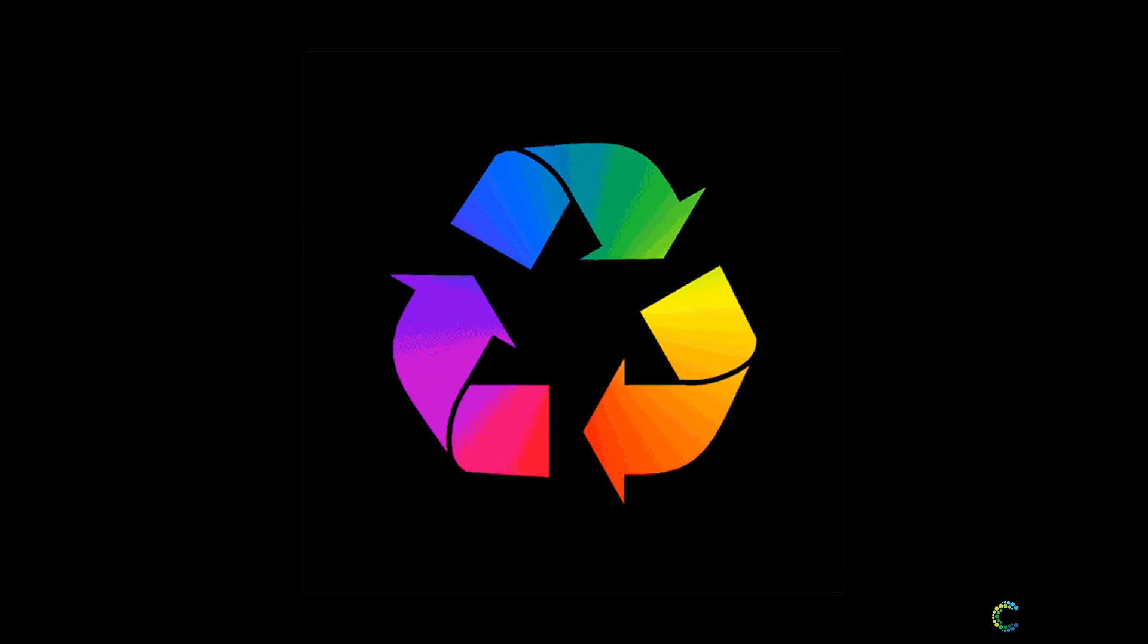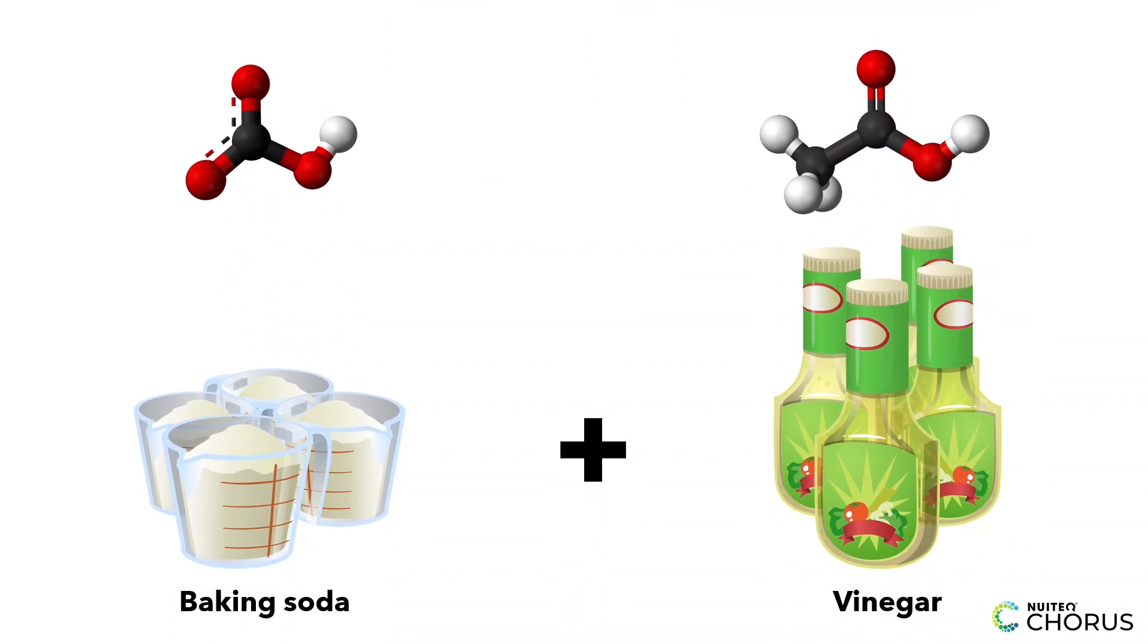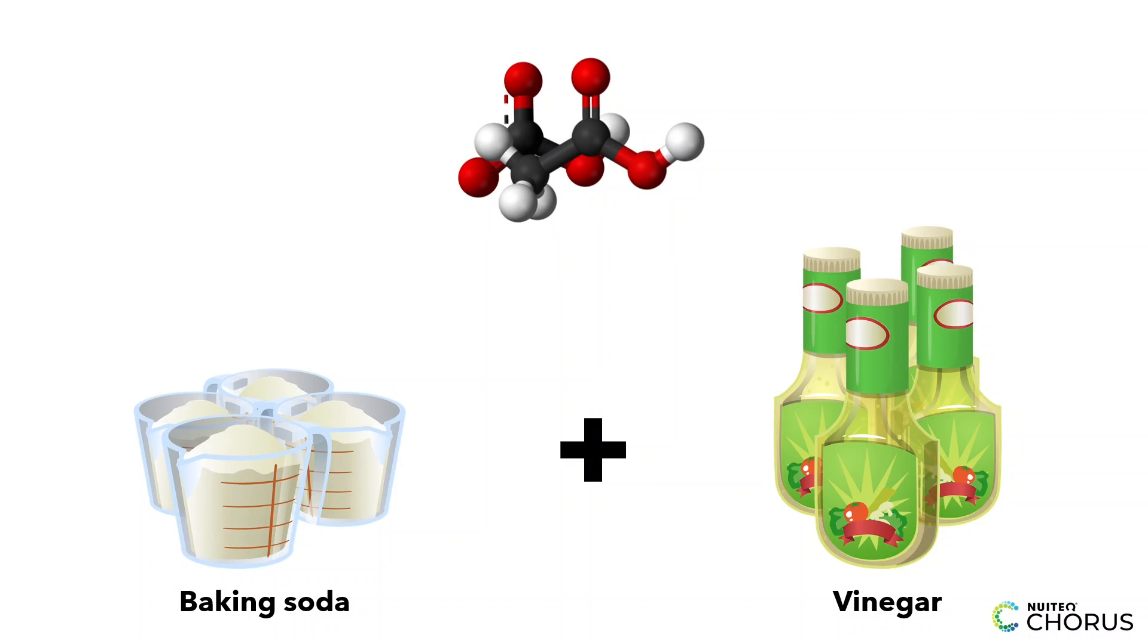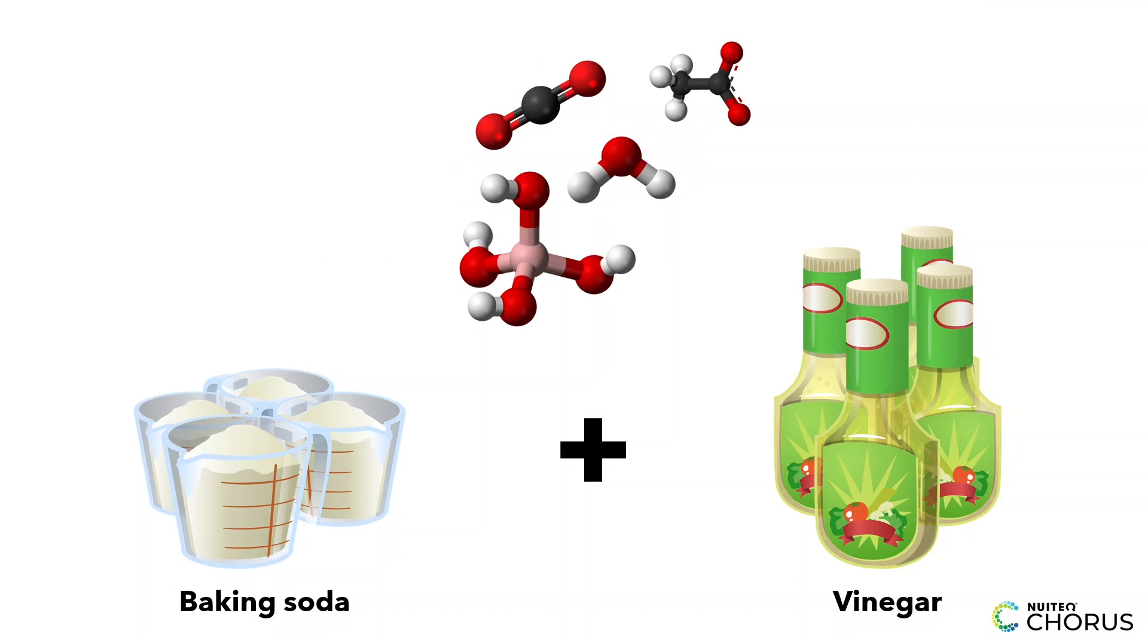This concept is crucial in real life. It helps us understand why we need to be careful with resources and why recycling is so important. Here's an easy example, mixing baking soda and vinegar. The atoms in both substances rearrange to form new substances, but the total number of atoms stays the same.